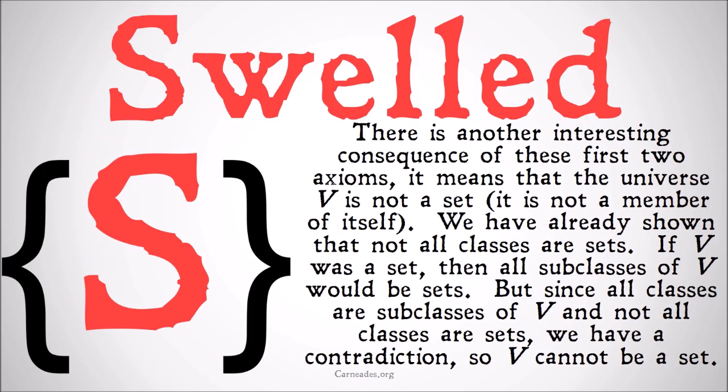There's another interesting consequence of these first two axioms: it means that the universe V is not a set — it is not a member of itself. We've already shown that not all classes are sets. If V was a set, then all subclasses of V would be sets. But since all classes are subclasses of V and not all classes are sets, we have a contradiction. So V cannot be a set.